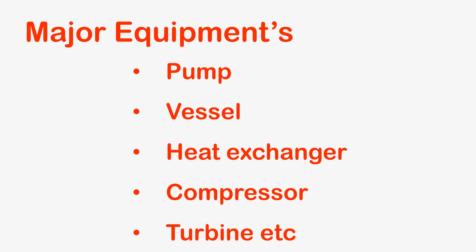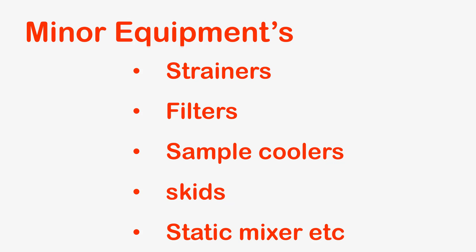P&ID generally includes the details of all major equipment such as pumps, vessels, heat exchangers, compressors, and turbines. P&ID also shows the details of minor equipment such as strainers, filters, sample coolers, skids, and static mixers.